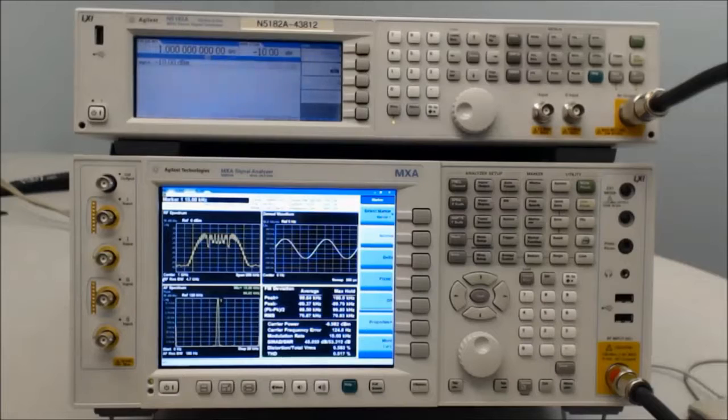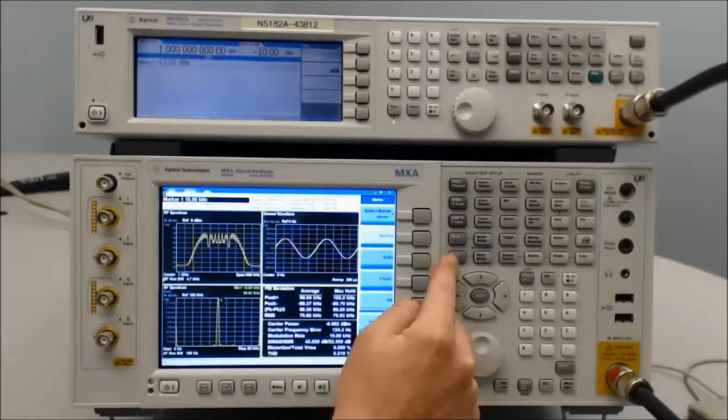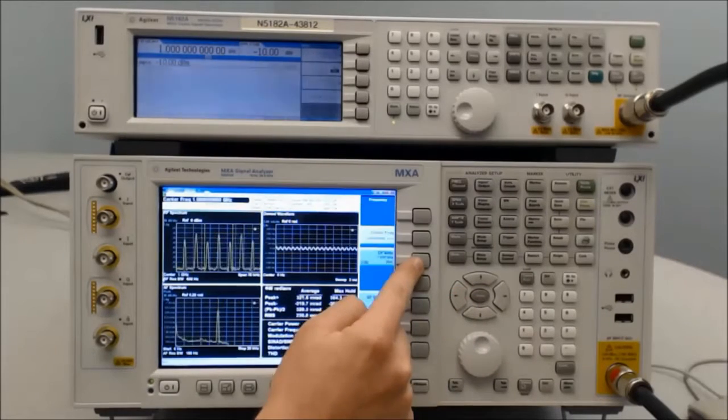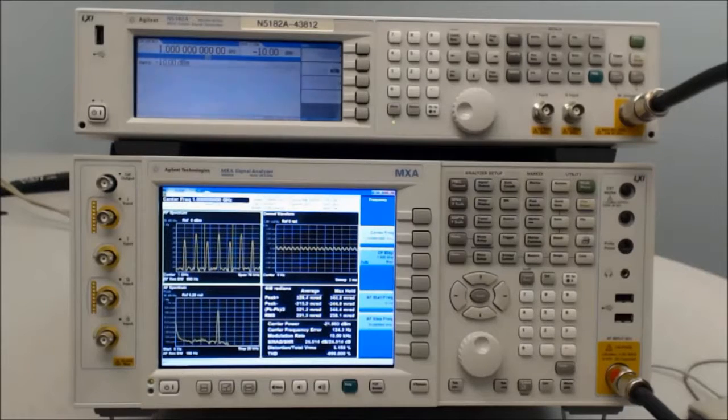To measure PM instead of FM, we want to go to the measurement setup and measure PM. Repeat the same steps I just listed and you will be able to measure PM deviation and the FM rate.